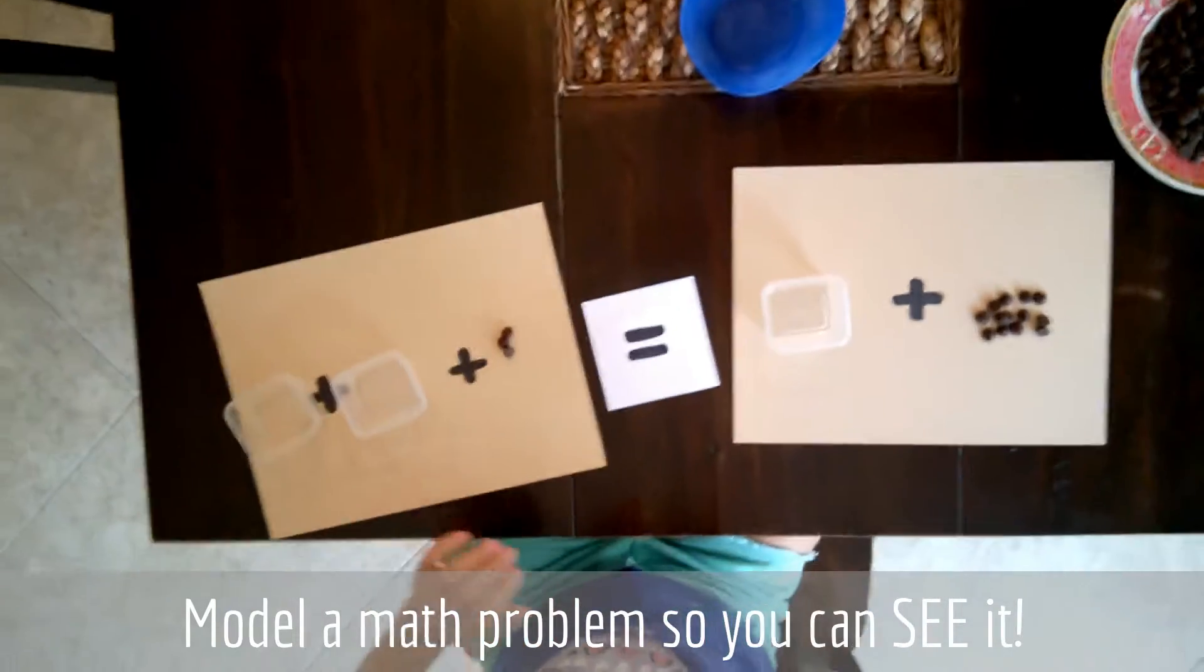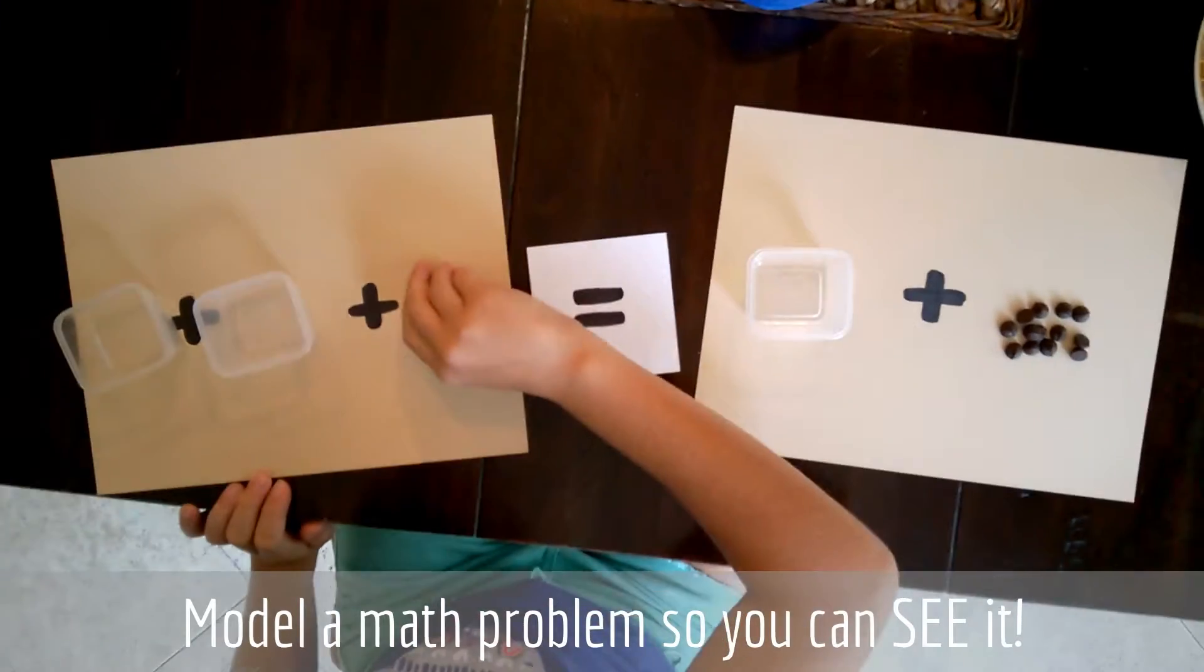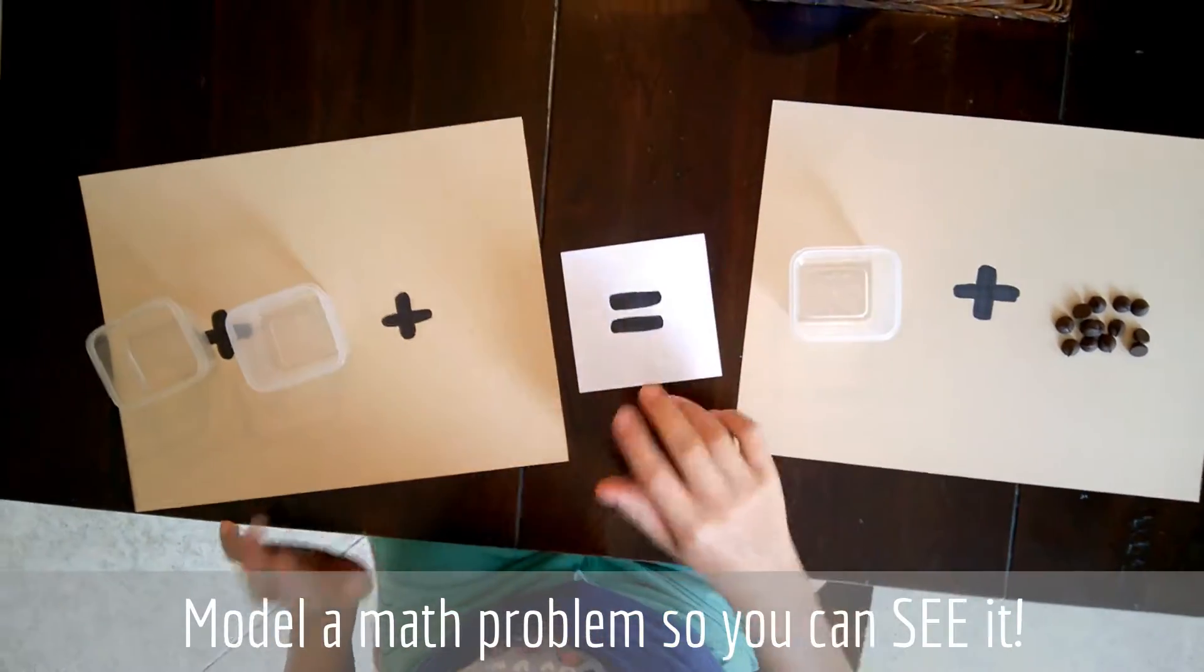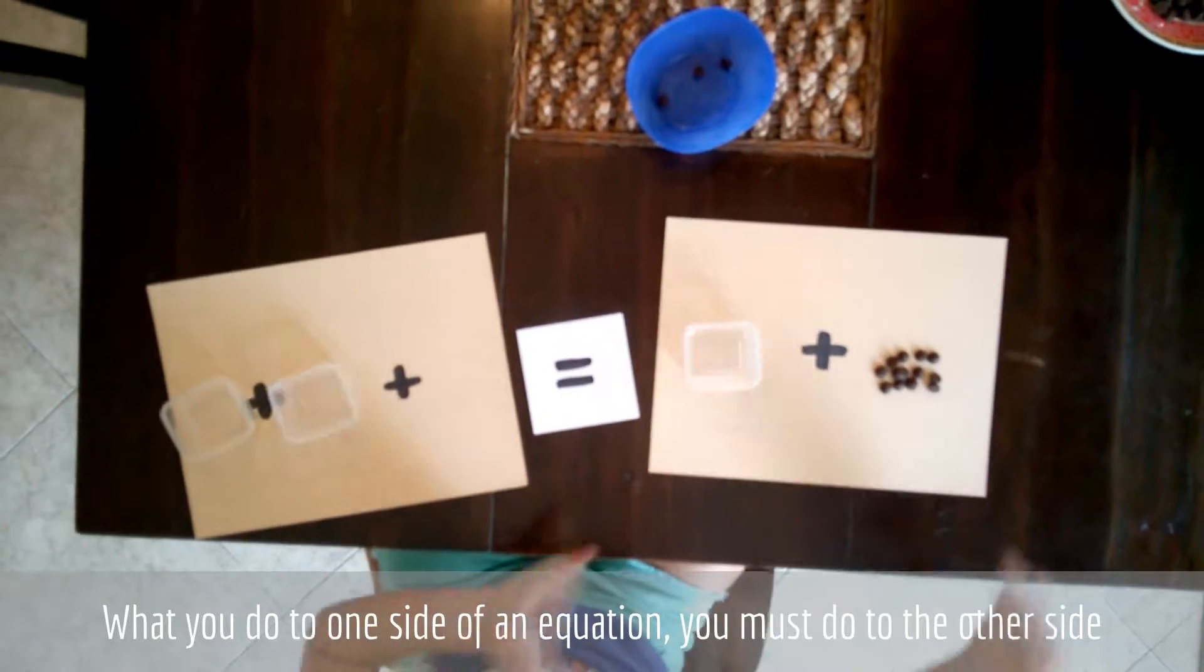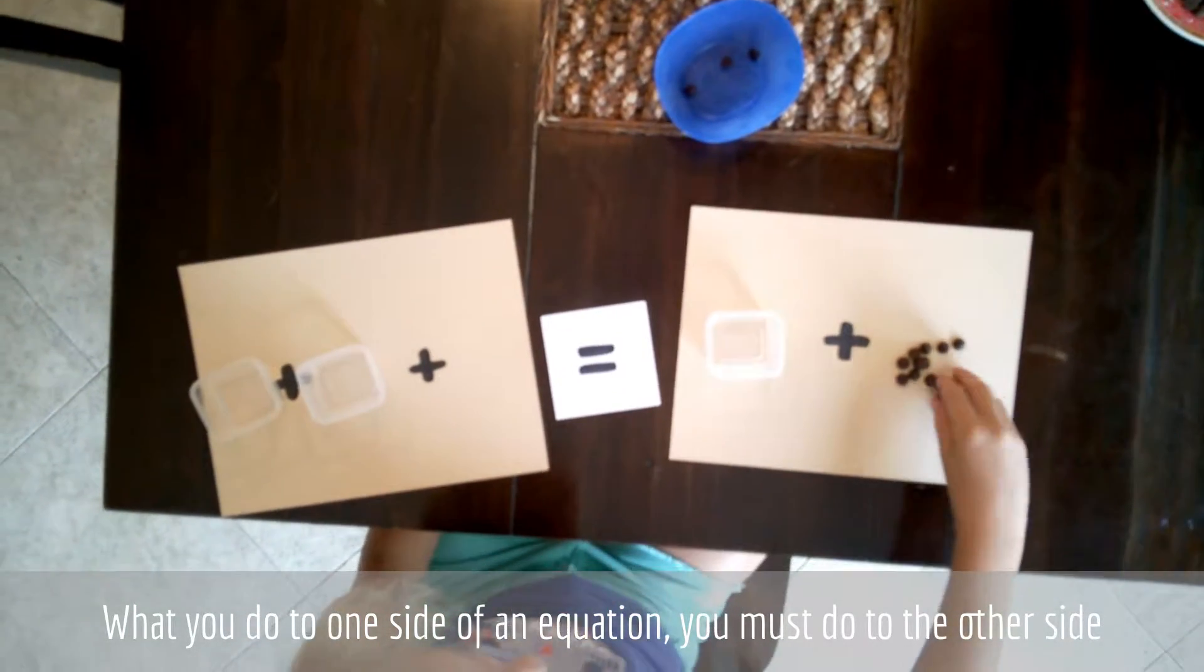So to get x or 1 cup by itself, we can take away 3 chocolate chips. And remember, what we do to one side of the equation, we do to the other side. So we are going to take away 3 from 13.